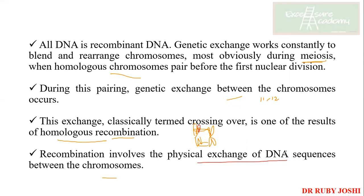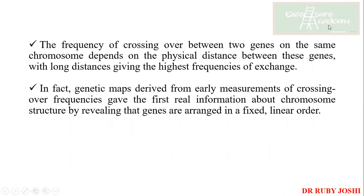So this is just the basics, the introduction to the chapter, what we are going to discuss. So the frequency of crossing over between two genes on the same chromosome depends on the physical distance. If the distance is more, there is more frequency of exchange. So the frequency is, in fact, genetic markers derived from multiple patients and crossing over. Frequencies gave course-real information about chromosome structure.